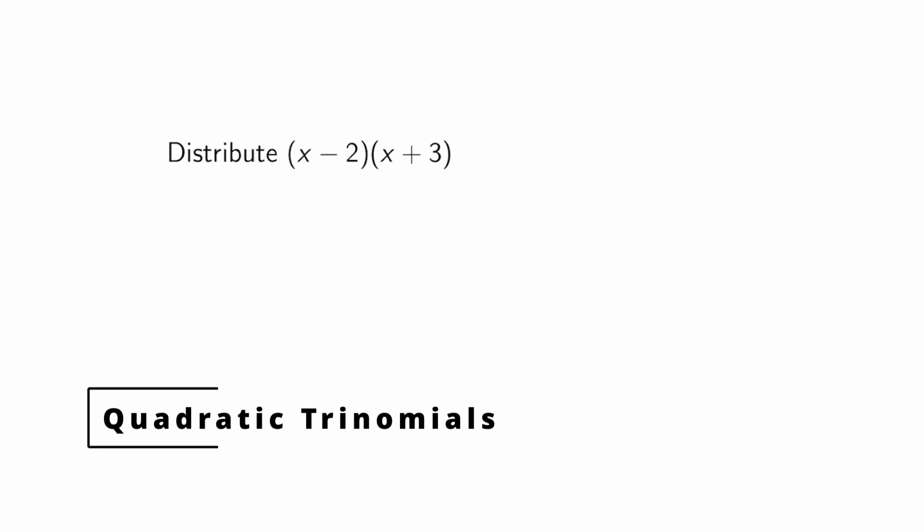Hello and welcome to an Orange Coast College mathematics video. In this video we're going to learn about factoring quadratic trinomials that have the form x² + bx + c. The important part here is that the coefficient of the variable squared term is 1.